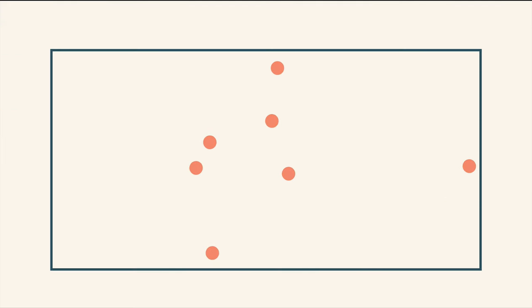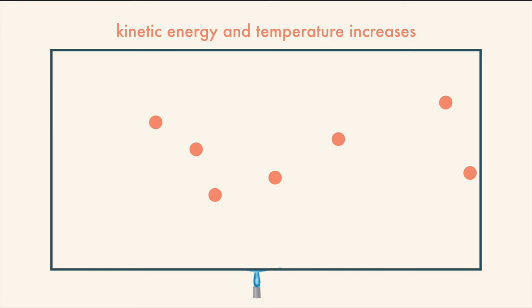When particles of a gas are heated, the particles will speed up. This means that the kinetic energy of the particles has increased, and therefore the temperature of the gas has increased.